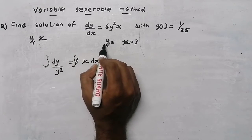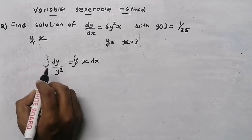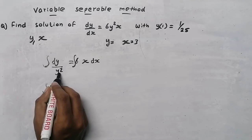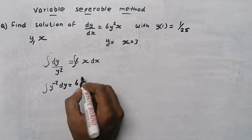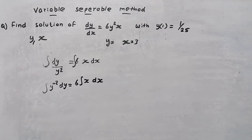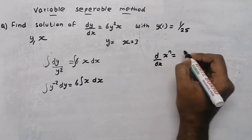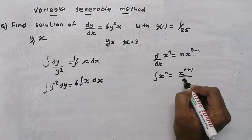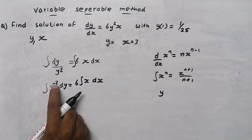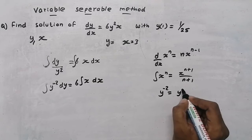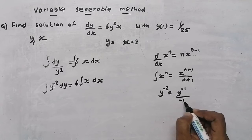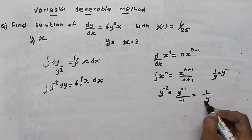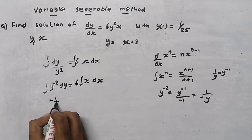Now I need to remove the differential, so I integrate both sides. I need the final answer in terms of y, so I need to remove the 'd' part. On the left side, y squared is in the denominator, so I move it to the numerator — y becomes y raised to minus 2, giving the integral of y raised to minus 2 dy. Using the power rule: integral of x raised to n is x raised to n plus 1 divided by n plus 1. Here n is minus 2, so we get y raised to minus 1 divided by minus 1, which is minus 1 by y.